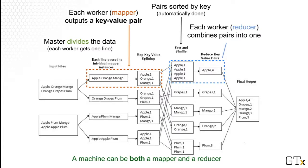Now we have many such key-value pairs. If you scan them quickly, you see that every word occurrence is associated with a one. This is great, because we can get the result if somehow we can group all four pairs of 'apple, one' together — then we get the result 'apple, four'. Similarly, if we group the two 'mango, one' together, we get 'mango, two'. Fortunately, this is automatically done in the shuffling phase, where all the key-value pairs from the map phase are automatically sorted by their keys and moved to the reducer for processing. This means all the 'apple, one' pairs will be grouped together — exactly what we want.